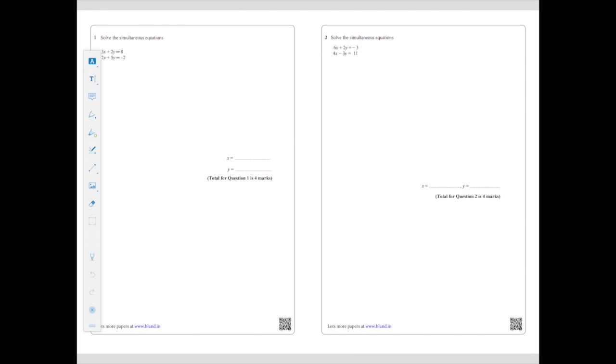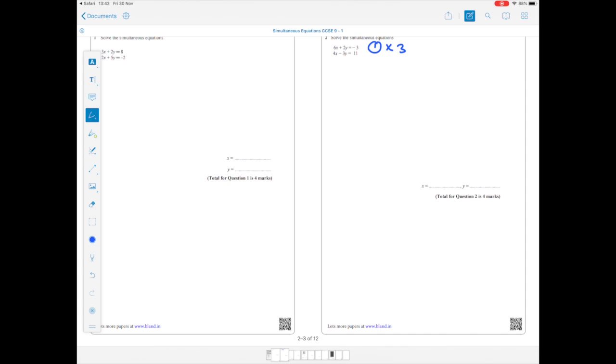I'm going to make my Y's the same. So in order to do that, what is the common number that both 2 and 3 go into? Well, it's 6. So I need to multiply equation 1 by 3, and I need to multiply equation 2 by 2. So let's do that now.